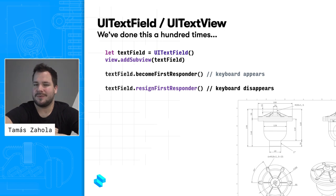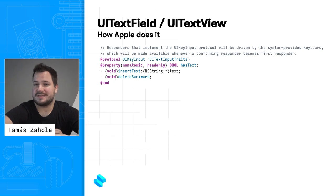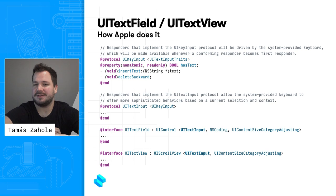But why does it work like this? Why does the keyboard appear when a text field becomes first responder? If you look into the UIKit header files, you will find a protocol called UIKeyInput. The documentation says that if the responder conforms to this protocol, the on-screen keyboard will appear when it becomes the first responder. And the built-in UITextField and UITextView classes indeed conform to this protocol — that's how they display the keyboard.